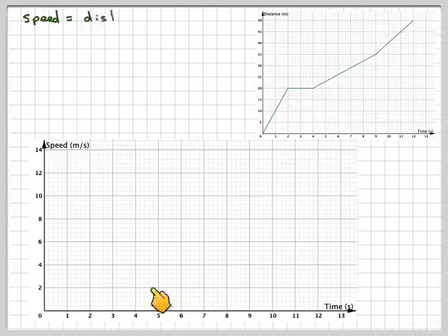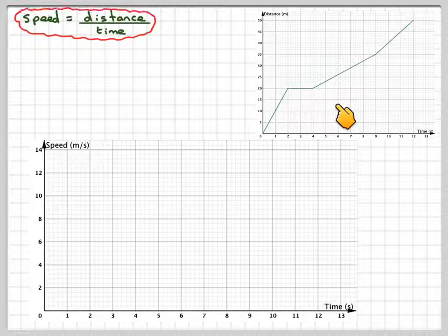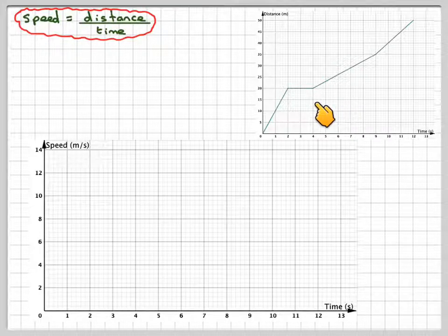Using this axis here, I'm going to draw a speed-time graph of this graph. Important for that is that speed is distance over time.